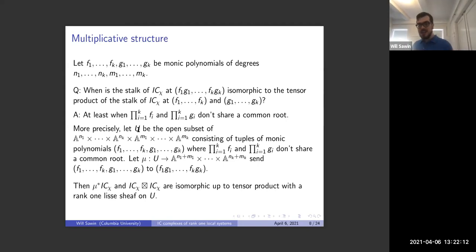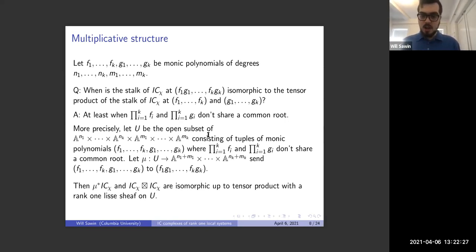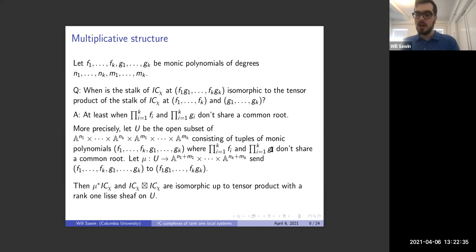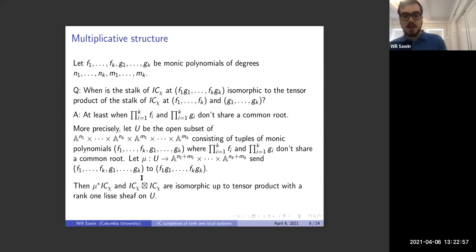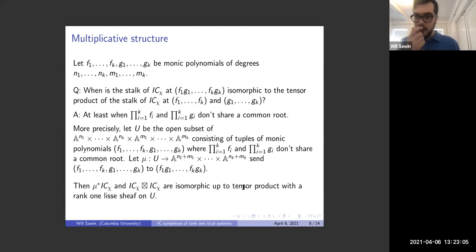This is not just a stalkwise identity — it is actually an identity of sheaves over the open subset of pairs of tuples (F_1,...,F_k) and (G_1,...,G_k) where none of the F_i's share a common root with any G_j. The F_i's can have common roots with each other, the G_j's can have common roots with each other, but no F_i can share a root with any G_j. The pullback of IC_χ under the multiplication map μ is equal to the tensor product of the two copies of IC_χ from the two factors, up to tensor product with a rank-one local sheaf on U.